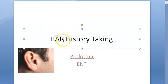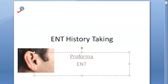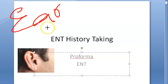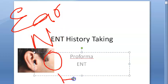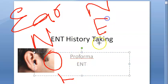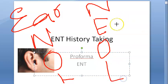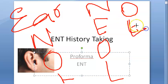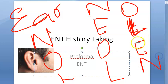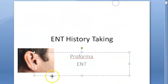Let us look at ENT history taking. If they give you an ear case, first you will do the ear examination, then the nose examination, then the oral cavity and lymph node examination. If they give you a nose case, check the nose first, then the ear, then the oral cavity and lymph nodes. If you get an oral case like tonsillitis, check the oral cavity and lymph nodes, then the ear and nose. Whichever system is the main complaint, check that first.